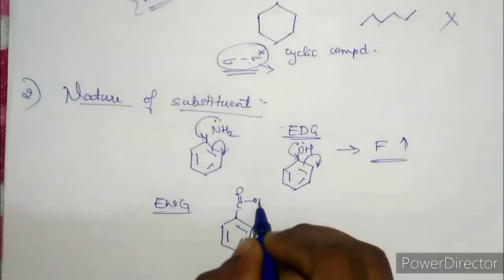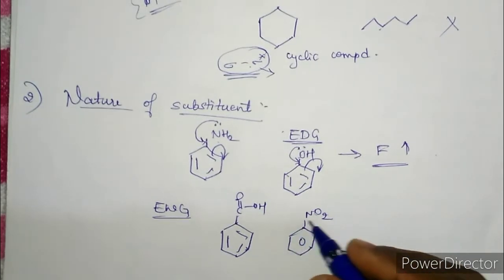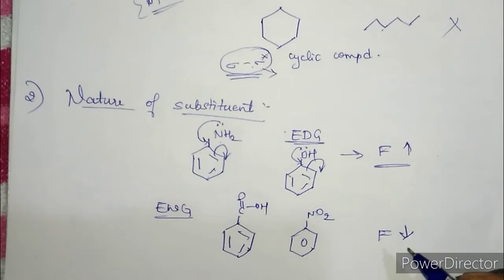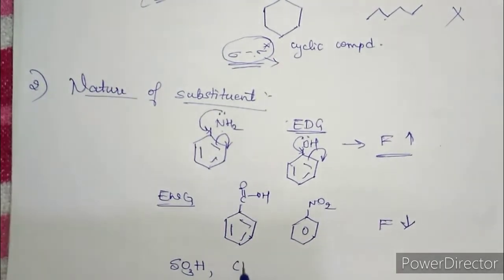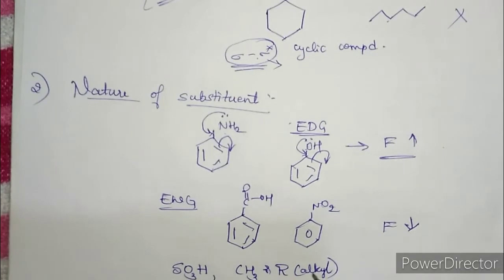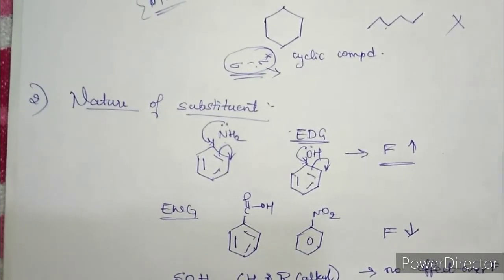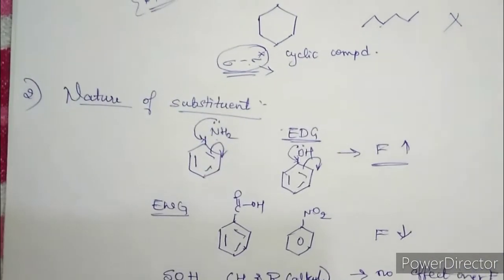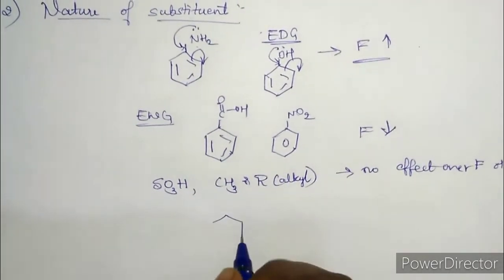Electron withdrawing groups such as carboxyl, nitro (NO2), or azo groups all decrease fluorescence intensity. However, groups like sulfonic acid or alkyl groups (R — meaning ethyl, methyl, etc.) have no effect over fluorescence or phosphorescence. They do not decrease or increase fluorescence; they simply have no effect.